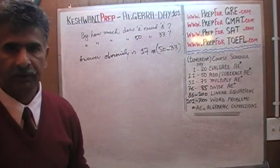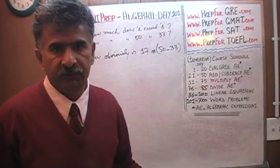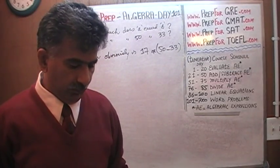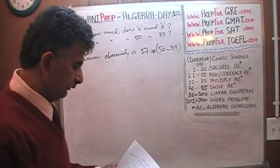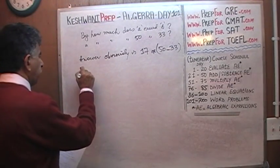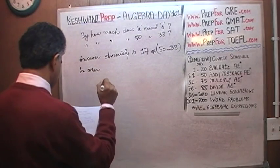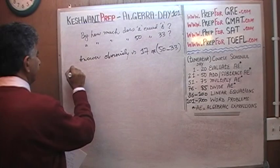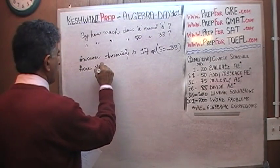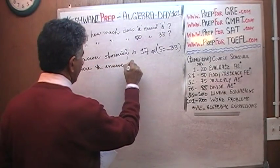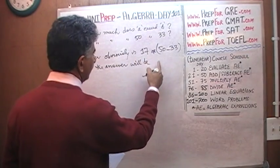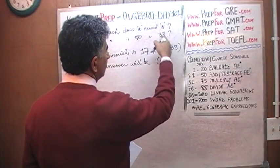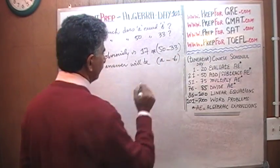If someone asks you, how much does 50 exceed 33? 50 exceeds 33 by the amount of 50 minus 33, whatever the difference between the two is. You see? The answer will be 50 minus 33. Our 50 was A, and our 33 was B. There you go. That's your answer.